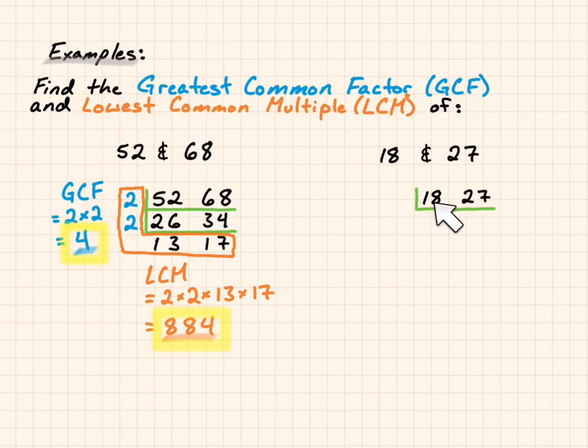2 doesn't go into both of these, so I'm going to try 3. 1 plus 8 is 9, I can divide that by 3. 2 plus 7 is 9, I can divide that by 3, so I know that both of these are divisible by 3. If I divide 3 into 18, I get 6. 3 into 27, I get 9. And I still have 3 as a common factor. I can see that 3 goes into both of these. 3 goes into 6 two times, and 3 goes into 9 three times.